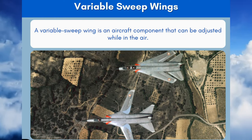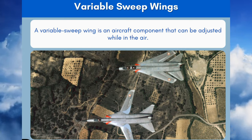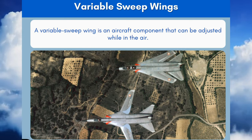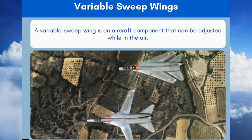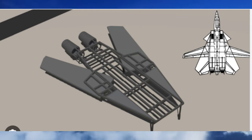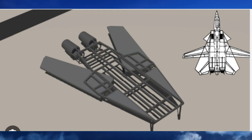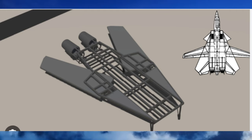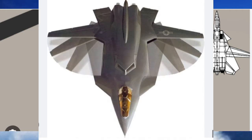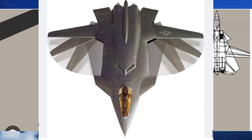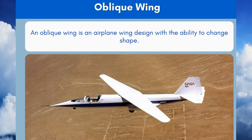9. Variable Sweep Wings. A variable sweep wing is an aircraft component that can be adjusted while in the air. Its wingspan can be changed from straight to swept back, and vice versa, during flight. This alteration of shape allows for greater control and aerodynamic efficiency.